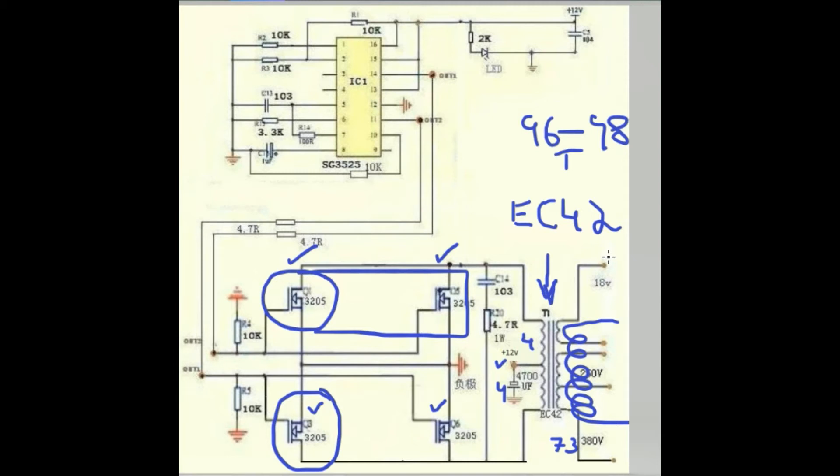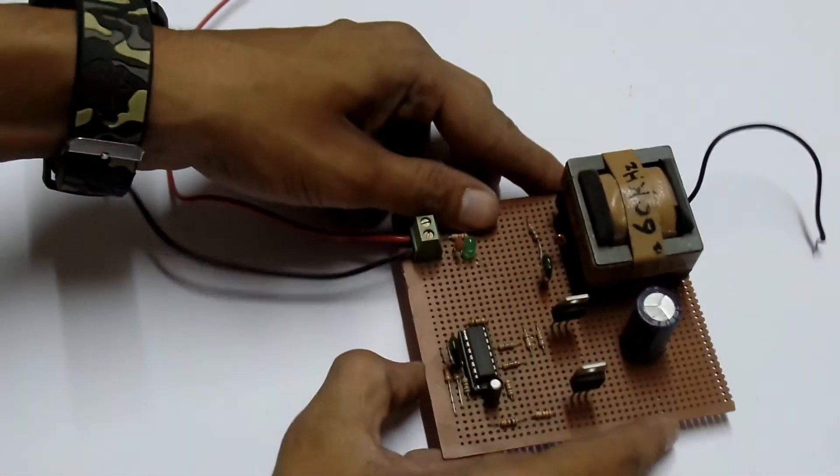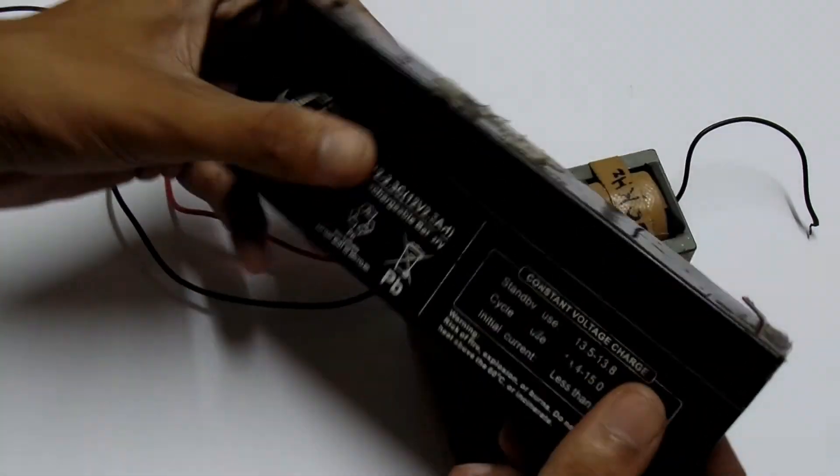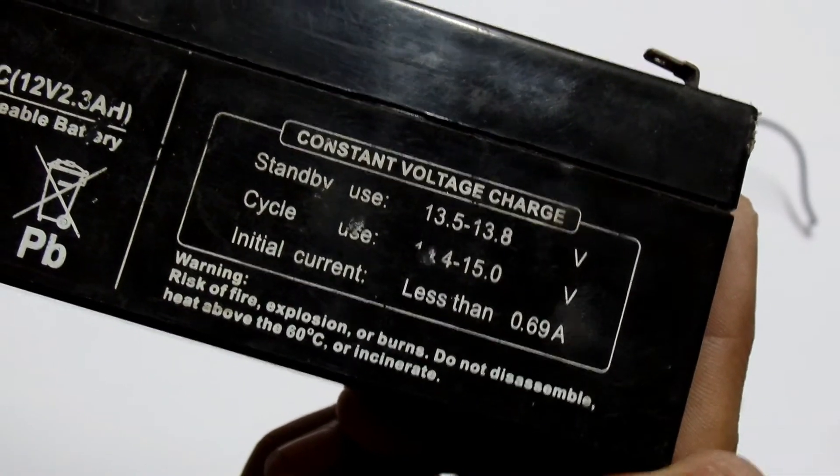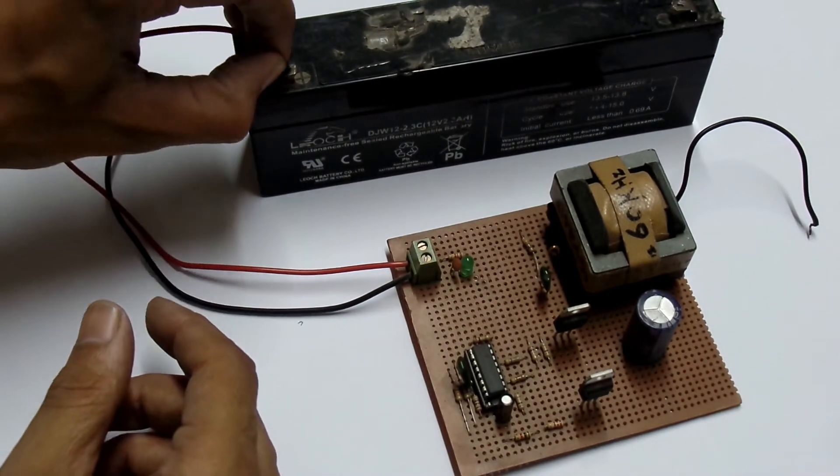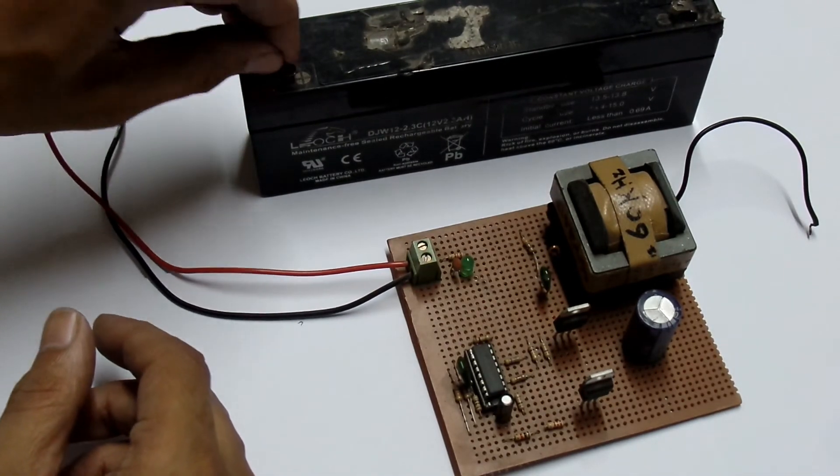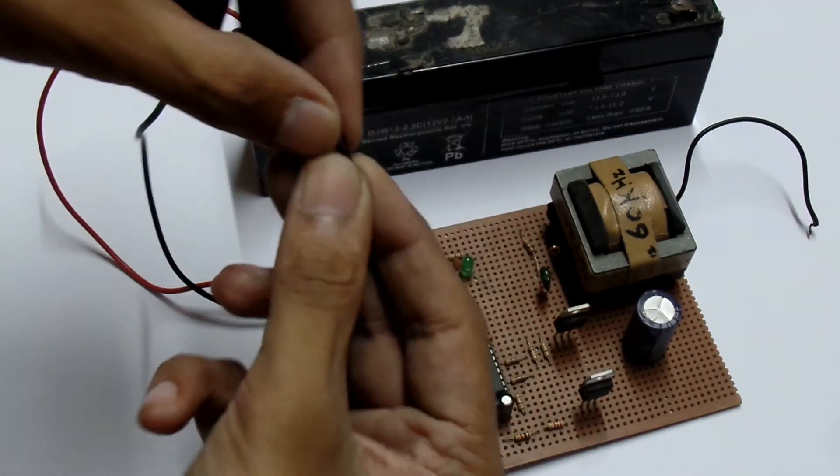Okay, here I'm having this board and what I am going to do is to connect it with this battery. This is 12 volt battery and here is the cycle and standby usage charging voltage written. So I connect the positive bar to the positive end. The battery is definitely not in good condition but however it works.